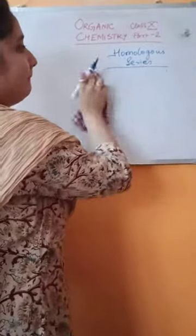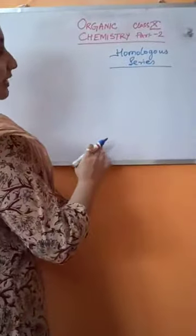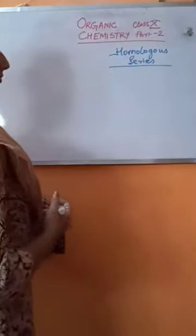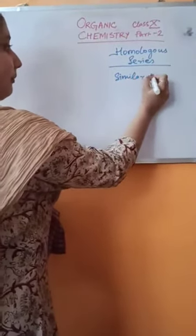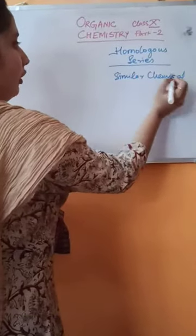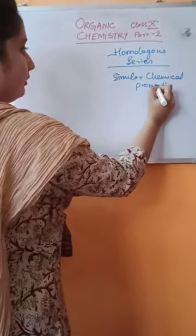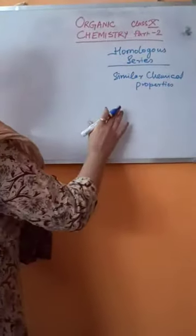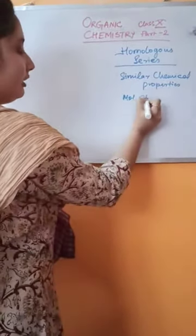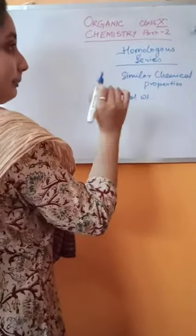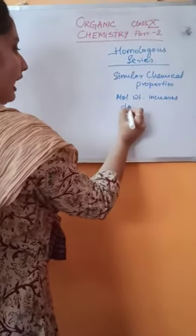What about the other characteristics of members of the homologous series? Another characteristic is that all the members will have similar chemical properties. Another important thing is that the molecular weight of the compounds in a particular series increases down the series.